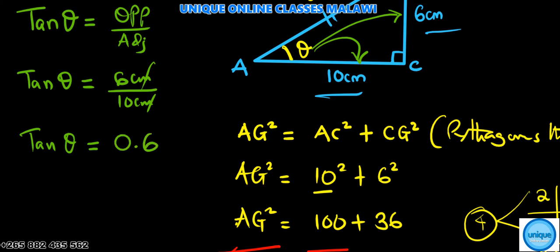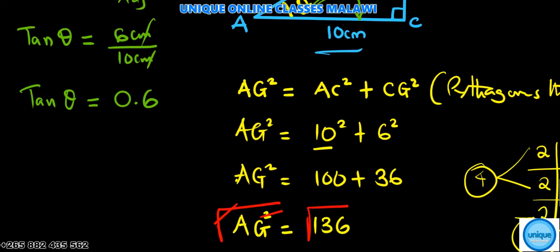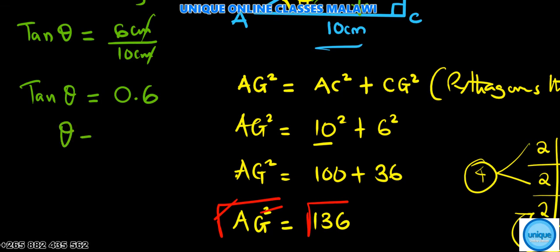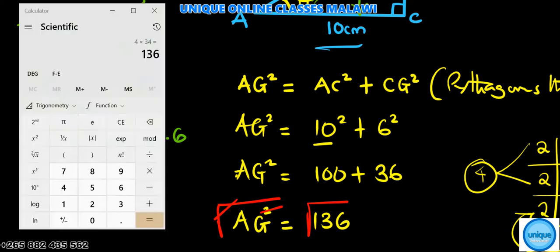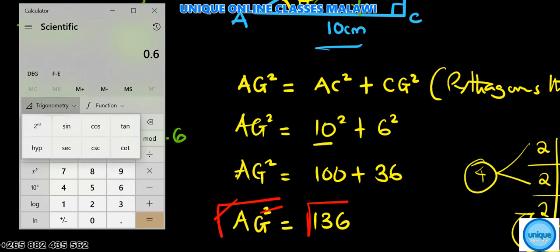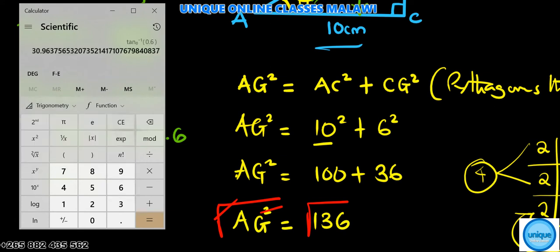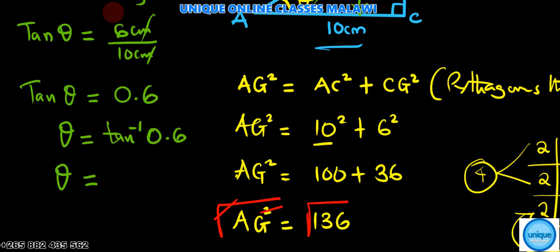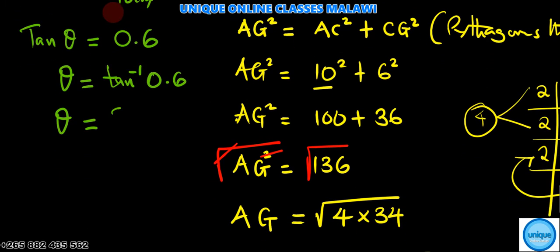To find the angle, theta equals tan inverse of 0.6, which equals 30.967. To the nearest degree, the answer is 31 degrees.